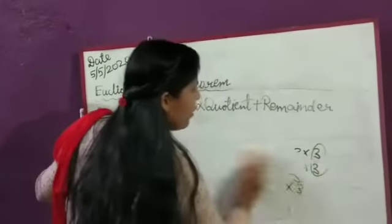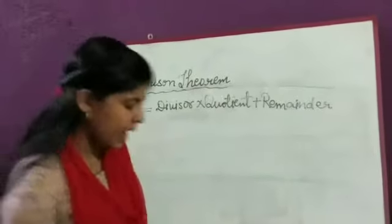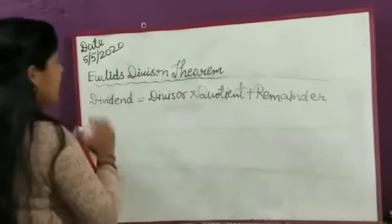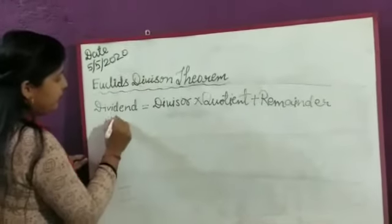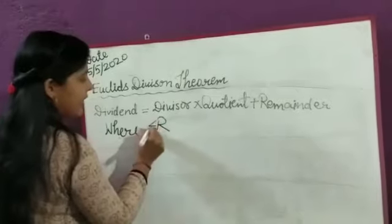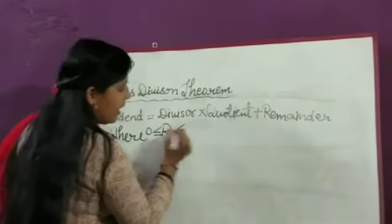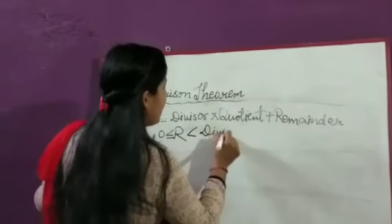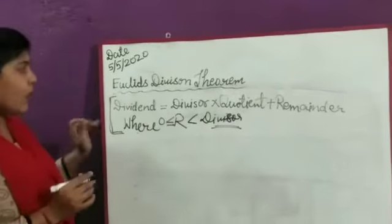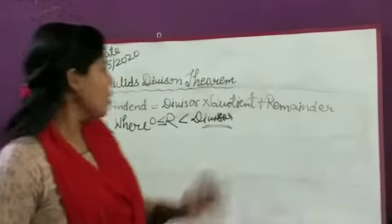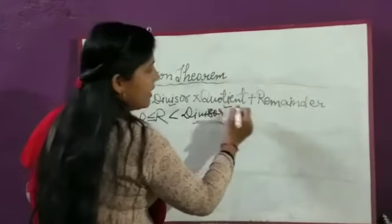Now Euclid's Division Theorem. For any two positive integers, dividend equals divisor times quotient plus remainder. The remainder is always greater than or equal to 0. It may be greater than 0, but it is always less than the divisor. Using this condition, this rule, this formula, we find out the HCF of given two numbers.